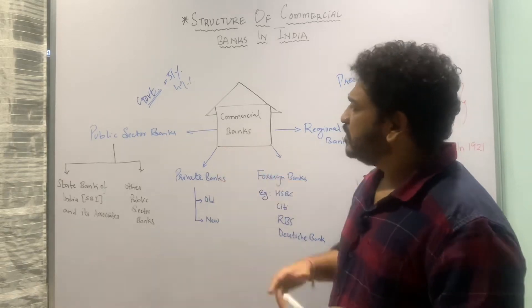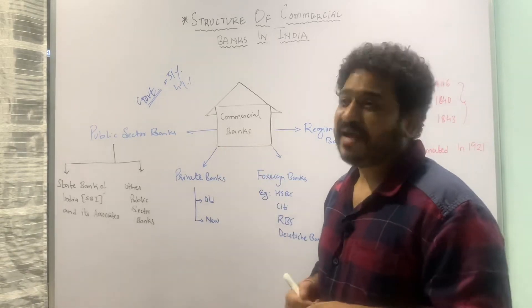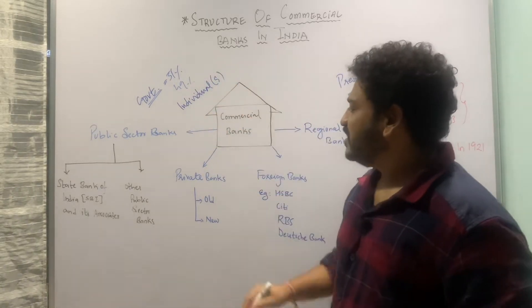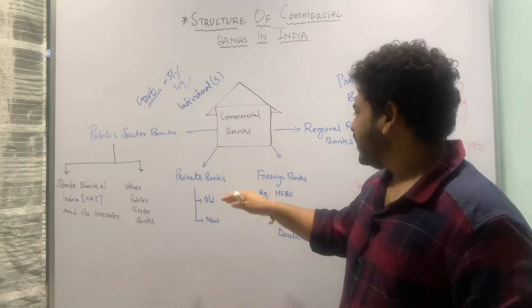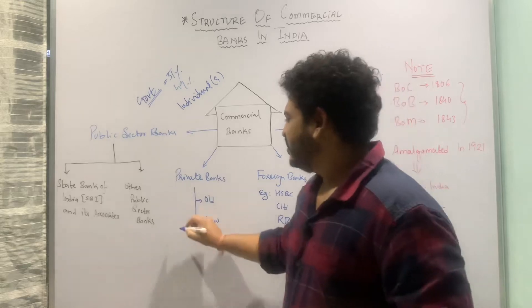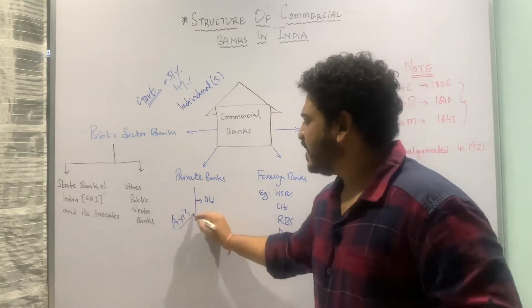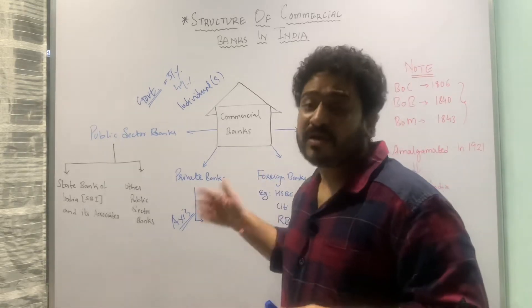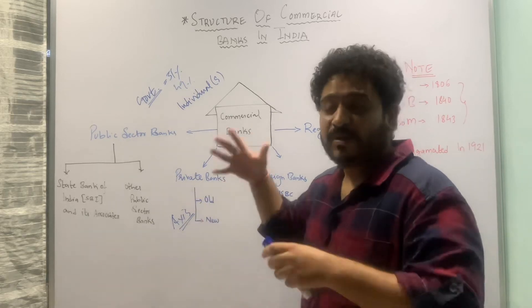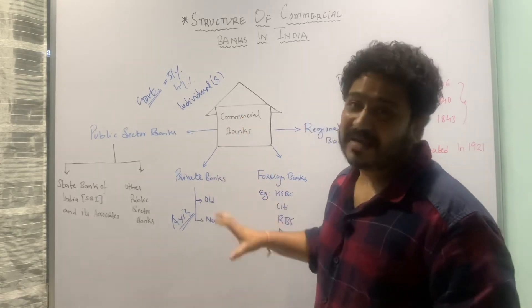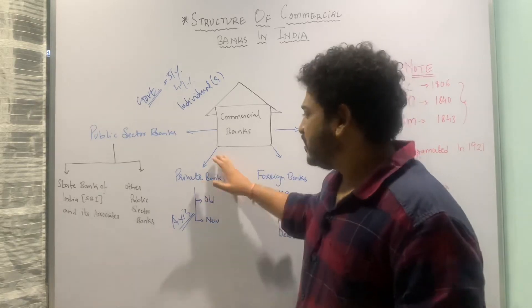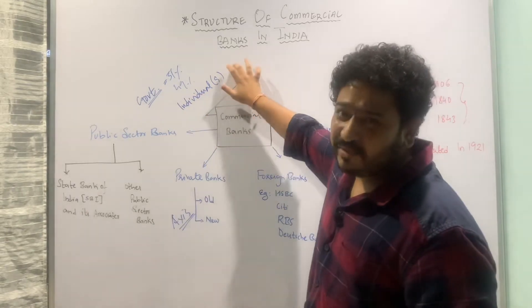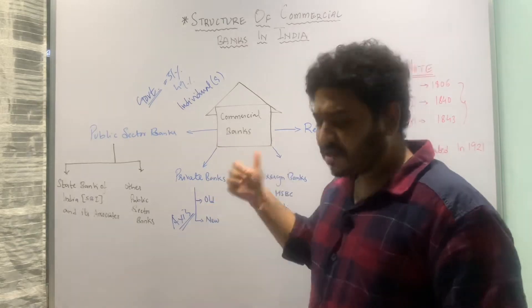Let us now move to private sector banks. Whenever the majority of stakes are held by an individual or group of individuals, it is called a private sector bank. For example, Axis Bank in India is a private sector bank. There is an old and new distinction which will be covered in greater detail in upcoming lectures, but in essence, a private sector bank is one in which individuals hold the majority of the stakes.